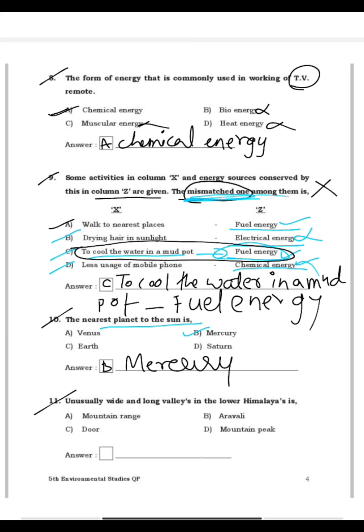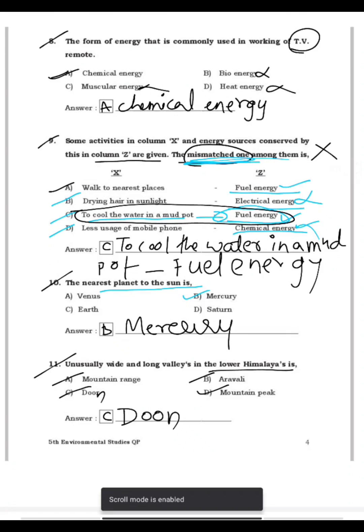Question 11: Unusually wide and long valleys in the lower Himalayas — what are they called? The answer is C — these are called dunes.